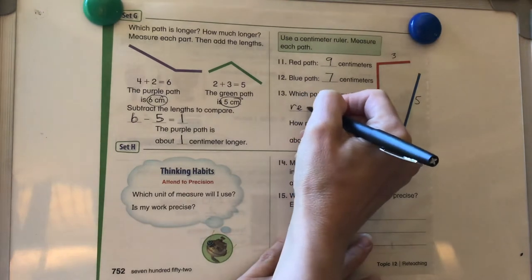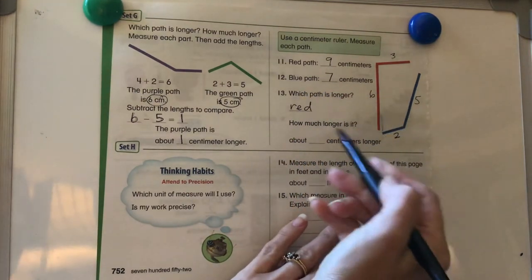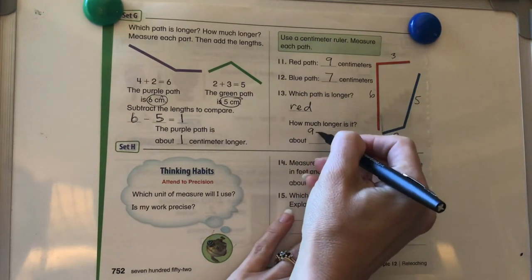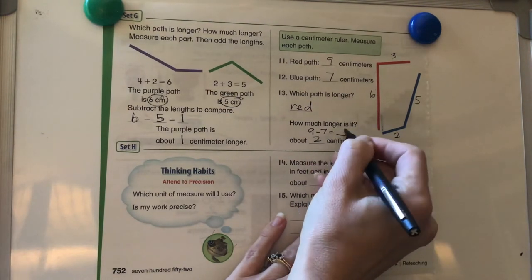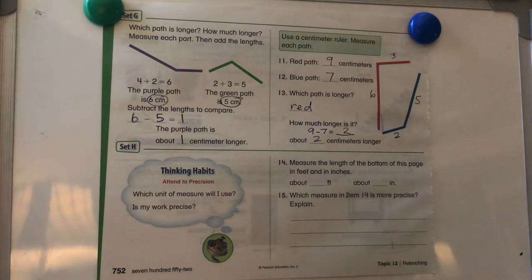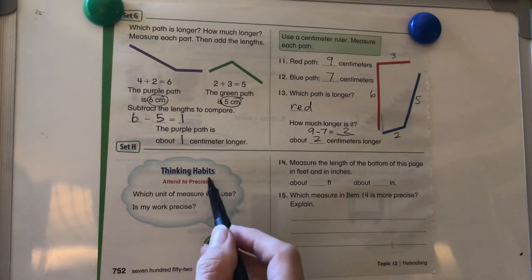So which path is longer? Well, the red path is longer. Now it says, how much longer is it? Well, I know that nine minus seven equals something. Nine minus seven equals two. So it's about two centimeters longer.